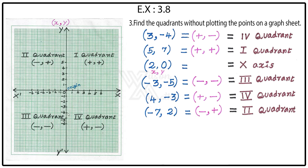Sixth point: minus 7 comma 2. Minus 7 is the first value — negative — and 2 is positive, so minus comma plus. Where does minus comma plus come? Yes, minus comma plus is the second quadrant. Write it here: second quadrant.